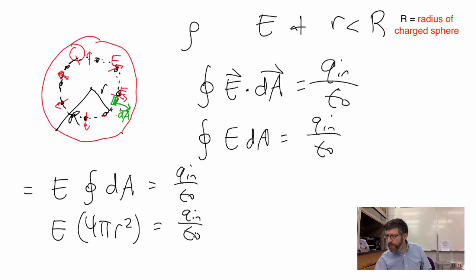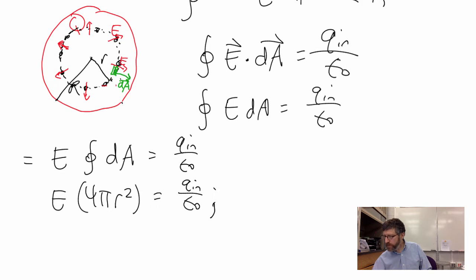That's when big R is way out to there. Q_in/ε₀. The hard math, not so hard in this situation, is what is Q_in? We've got to figure out what Q_in is. That's really the tough part. What I end up with, the easy part, is E field will be Q_in/(4πε₀r²). Same as before, but I've got to figure out what that Q_in is.